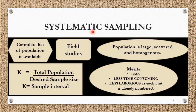Next is systematic sampling. This is mostly done when the population is very large and scattered. For example, if you want to study a population in a village where house numbers are already labeled and the population is very large, we will first decide the sample size we want.